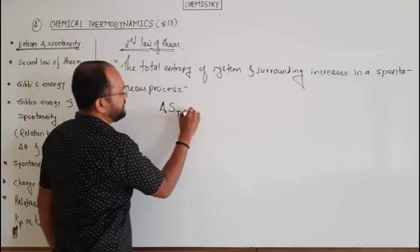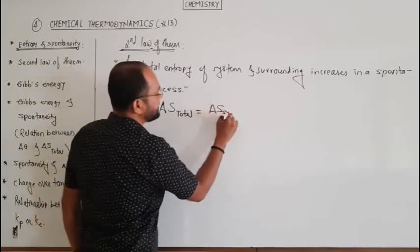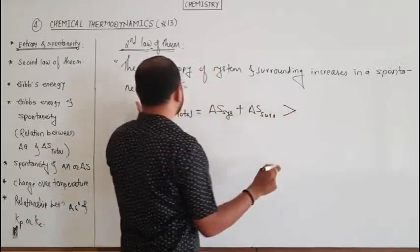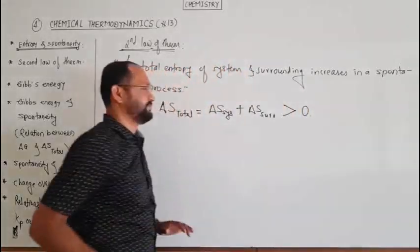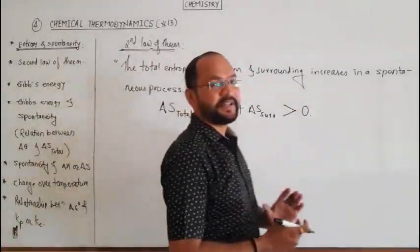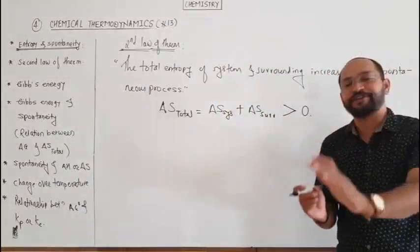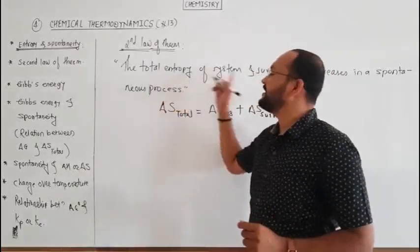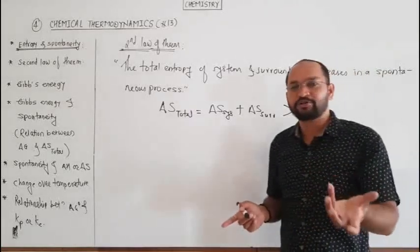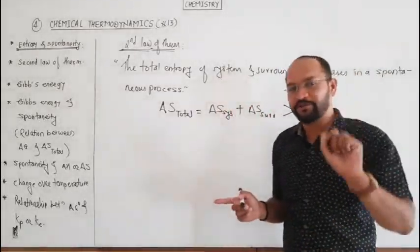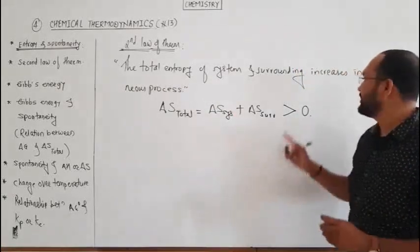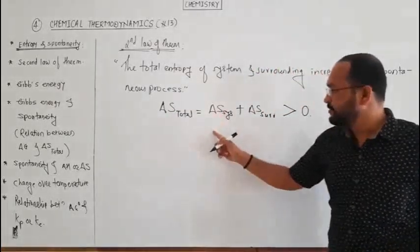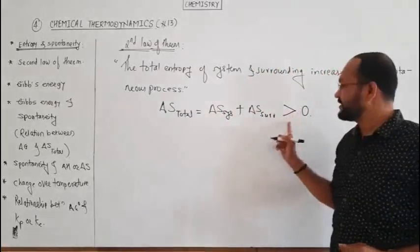Therefore, delta S total is equal to delta S system plus delta S surrounding, and this increases in the spontaneous process — meaning delta S total is greater than zero. The total entropy of the system and the surrounding, that is the universe, increases in the spontaneous process. So delta S total = delta S system + delta S surrounding > 0.